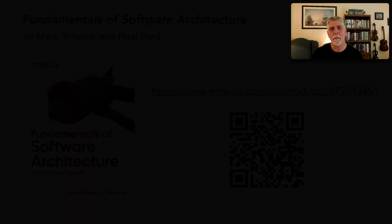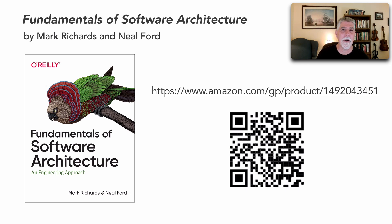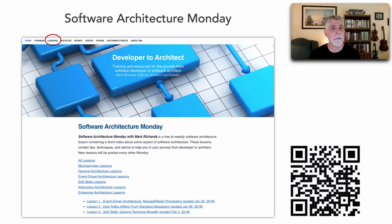In our book, The Fundamentals of Software Architecture, we have a whole chapter on architecture decisions, and this is one of three architecture anti-patterns associated with making architecture decisions — you can read those in that chapter. Other references include my website developer2architect.com and specifically Software Architecture Monday, where all of these short lessons are housed.